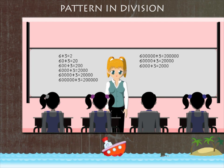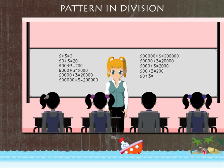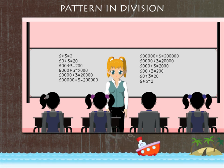you get 2,000, then 200, then 20, and finally 2.